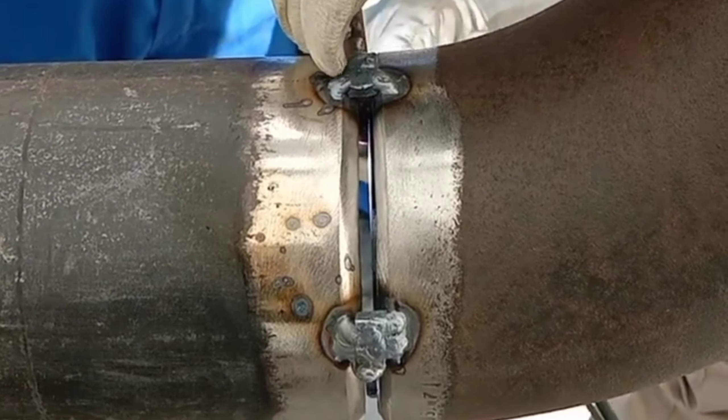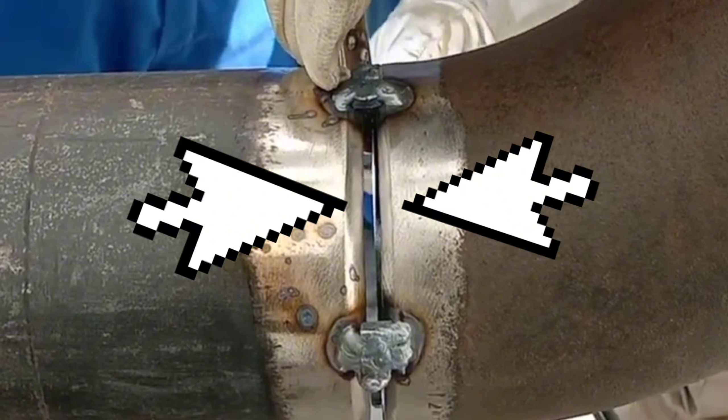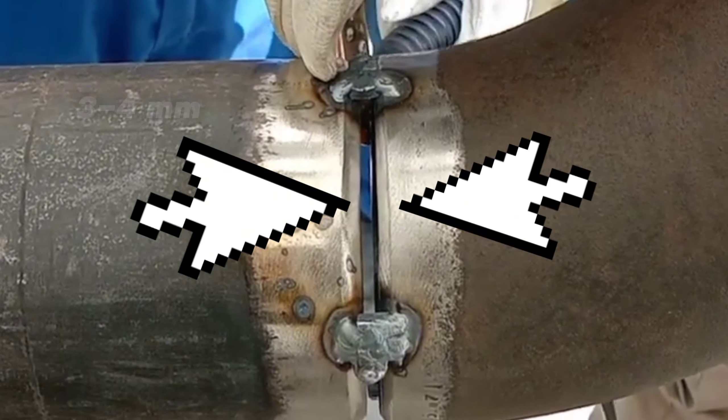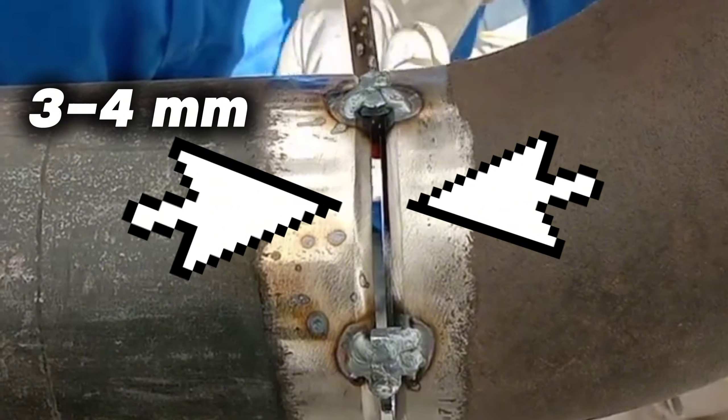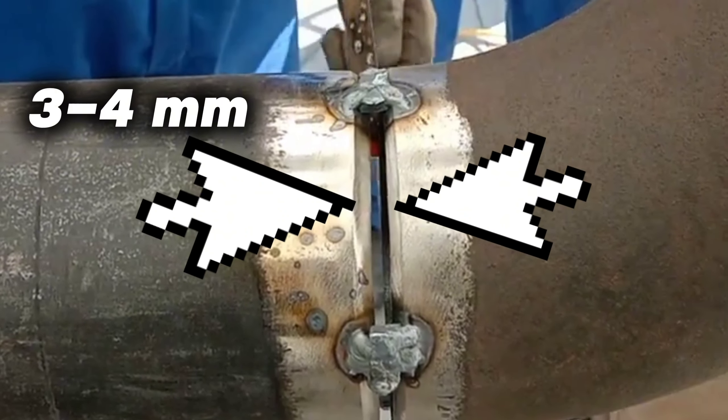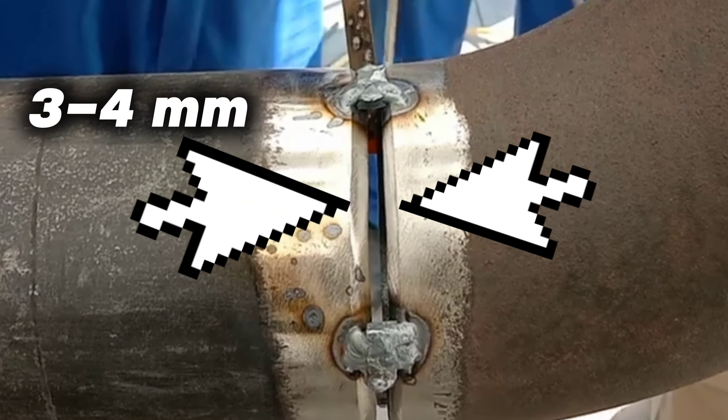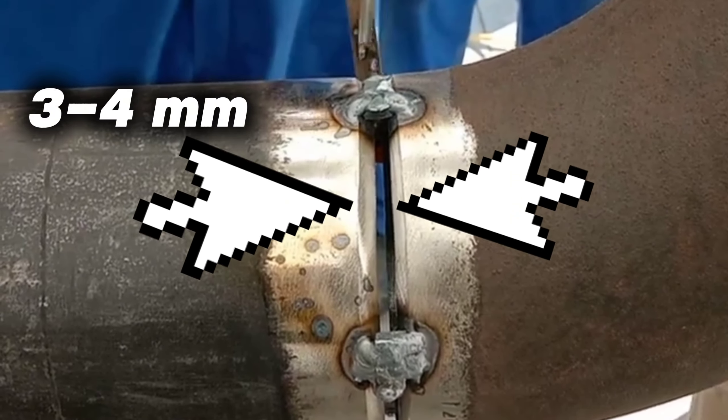During fit-up, such a gap is opened between the pipe fittings to be welded, a gap of approximately 3 to 4 millimeters. Having this 3-4 millimeter gap is for better root welding. Accordingly, we can easily calculate the length of the pipe segment between the elbows.